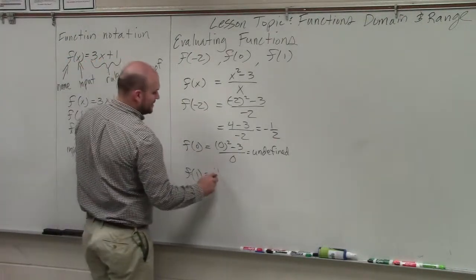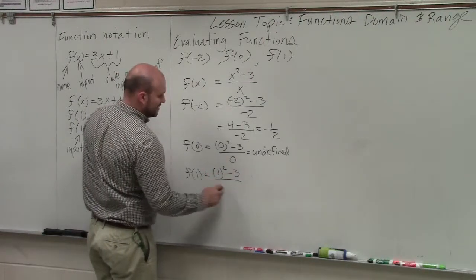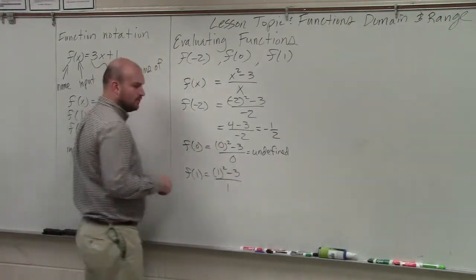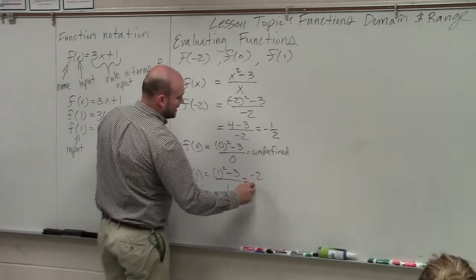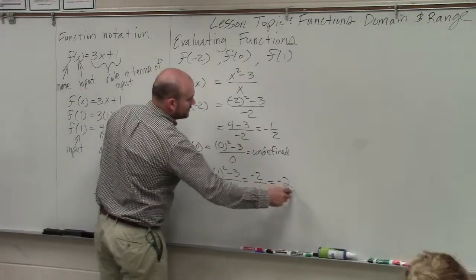And then let's do f of 1. So in this one, you'd have 1 squared minus 3 divided by 1. 1 squared is 1. 1 minus 3 is negative 2 over 1, which equals negative 2.